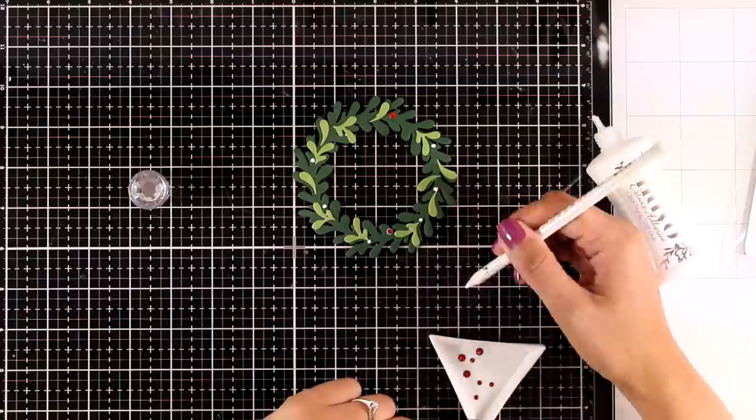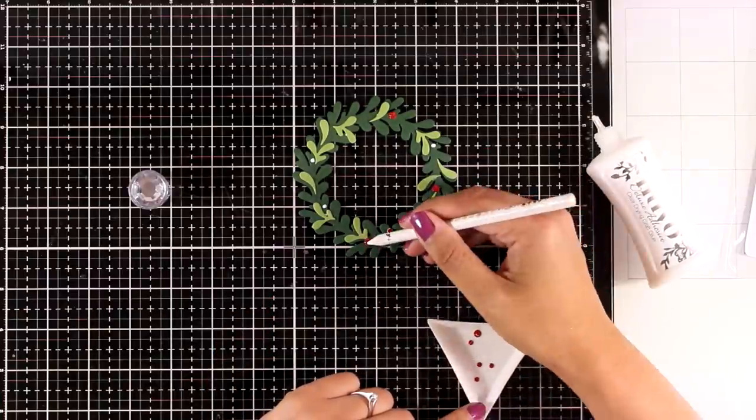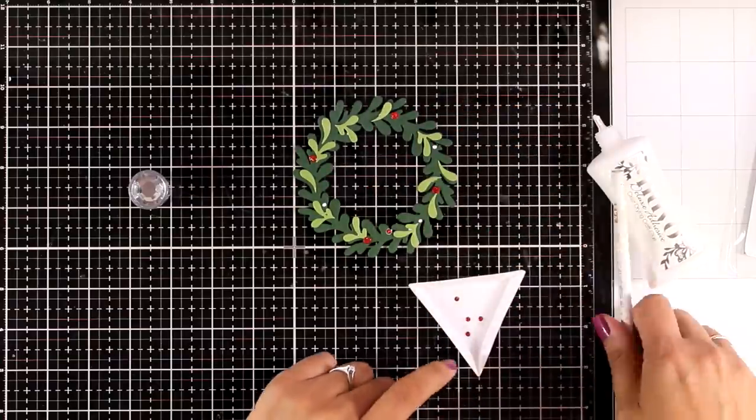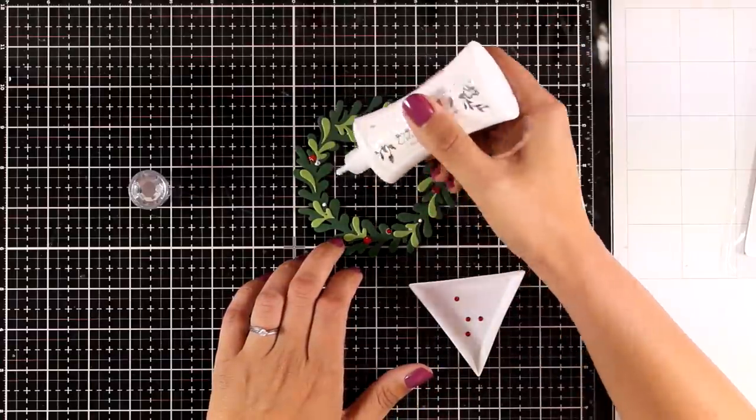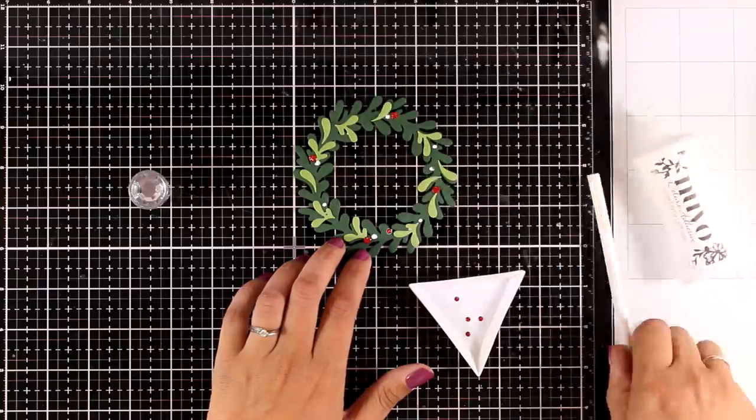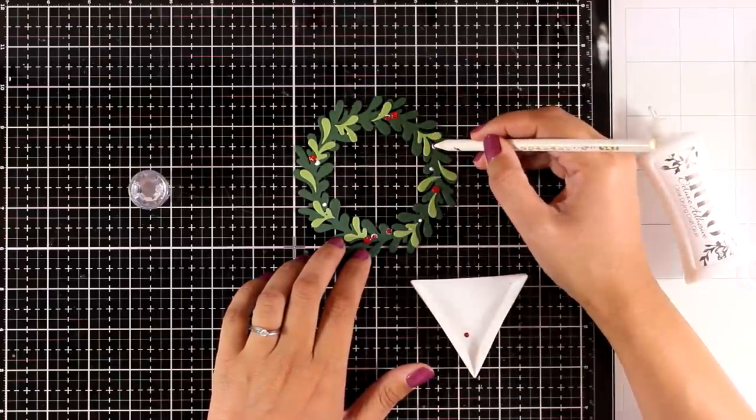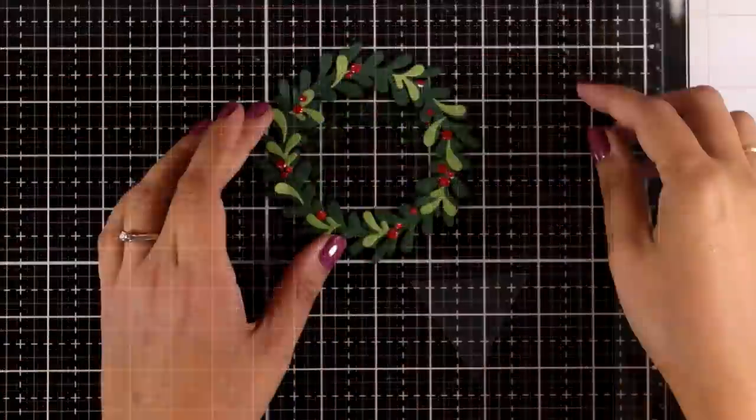Now if you want you can skip this step and instead of cutting out all those little dots and sticking them down, you can always use your Nuvo drops or your Stickles. Nuvo Deluxe dries completely clear so even if you can see some of it behind those berries, it's not going to show at the end.